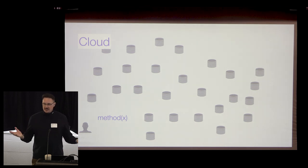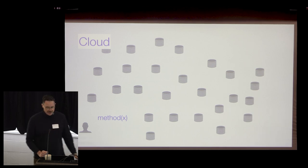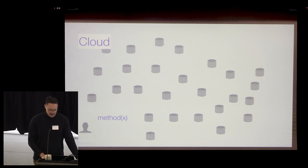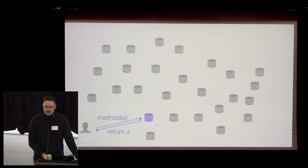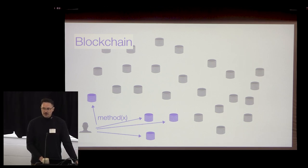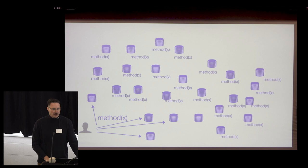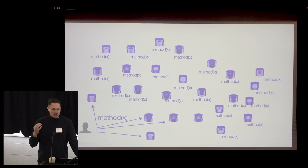You don't have to understand all the details of blockchain to understand what I'm going to present. Think of blockchain as a distributed set of nodes or servers — computers that are going to run computation for you. In a cloud environment, the cloud service provider finds the nearest node to you, that node runs the computation and tells you the answer. Blockchain works differently: you broadcast the computation to all the nodes in the network, it propagates around, and every node is going to run your computation. There could be thousands of nodes all running that computation.